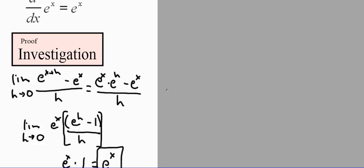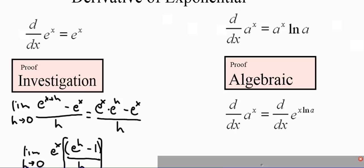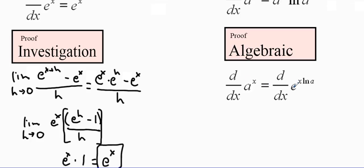This is very important because it allows us to find all the other derivatives. For example, we're going to do an algebraic proof to verify that the derivative of a to the x equals a to the x natural log of a. To do this, we rewrite a to the x as e to the x natural log of a. If you recall, a to the x can be rewritten as e to the natural log of a to the x, because these are inverse properties. Using the logarithmic property of exponentials, we can bring that exponent down as a coefficient, giving us e to the x natural log of a.